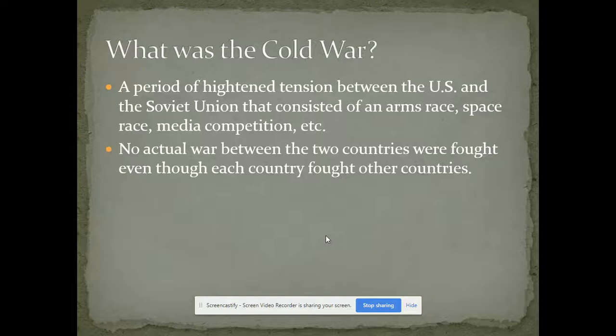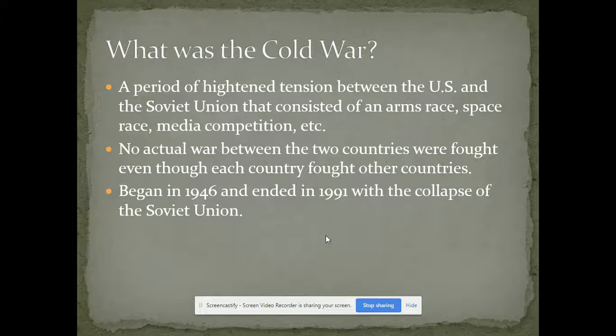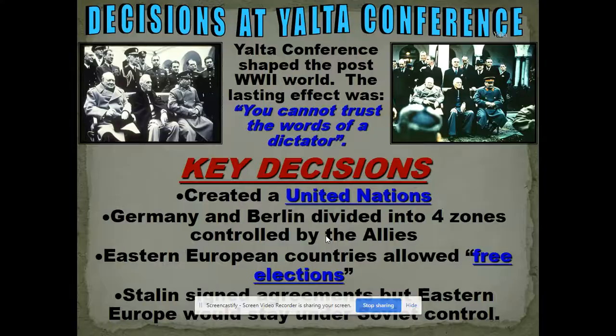No actual war between the two countries was fought — you want to underline that in your notes. The Cold War goes from late 1945 to the collapse of the Soviet Union in 1991. We've covered Yalta in the World War II lecture, but to go over the highlights: it does create a UN, Germany is divided up into four zones, and Berlin is also divided into four zones. Those zones become the center of Cold War conflict.